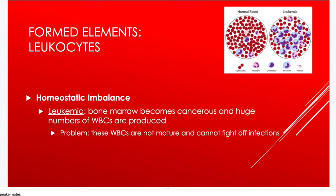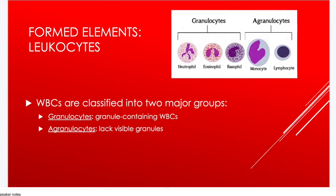With leukemia, white blood cells are produced so rapidly they don't have time to mature, so even though the count is very high, they can't effectively fight infection. White blood cells are classified into two major groups: granulocytes — neutrophils, eosinophils, and basophils — which have granules (dots) in their cytoplasm, and agranulocytes — monocytes and lymphocytes — which do not.